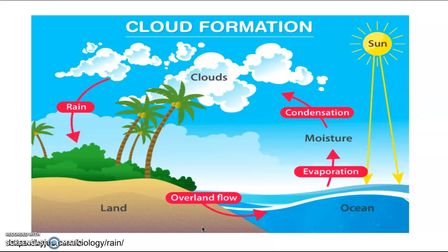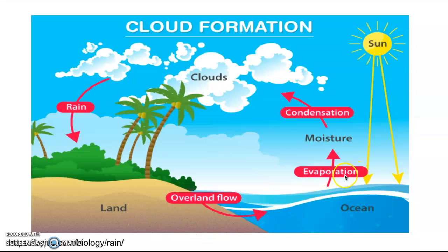It depends on the temperature within the cloud and at the earth's surface. This picture shows the cycle from the sun supplying heat on the ground, evaporation of warm air into the sky, condensation to form the cloud, and then the cloud producing rain, snow, etc.